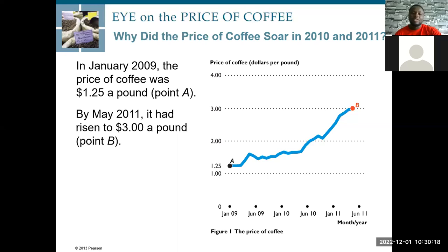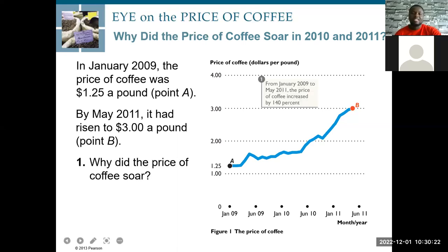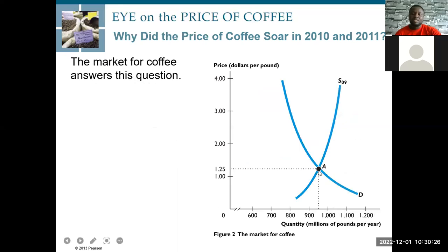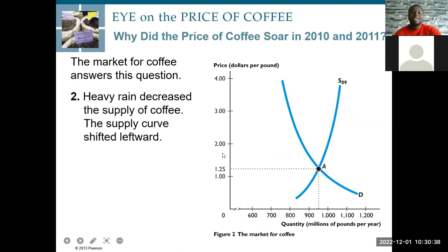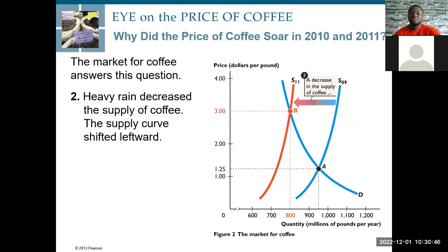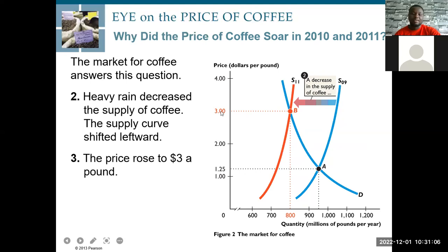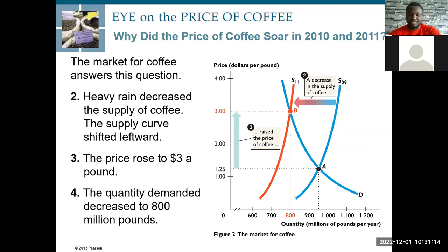We can easily explain this using the market for coffee. Assuming the initial equilibrium was at point E at $1.25 per pound, with production in the millions of pounds per year. Then there were heavy rains, which destroyed some of the coffee farms. Supply decreased, shifting to a new equilibrium at point B. When supply decreases with demand held constant, price goes up and equilibrium quantity falls. Price increased to $3.00 per pound and quantity fell from 1000 to 800.